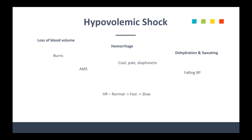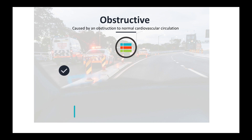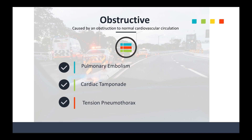Hypovolemic shock is the most common — we see this all the time. This is that loss of blood or loss of fluid: hemorrhaging, dehydration, excessive sweating, or burns where the patient loses plasma. Your altered mental status, cool pale diaphoretic patient, falling blood pressure, and heart rate going from normal to fast to slow as the patient decompensates in hypovolemic shock. Of course, it's important to find out why the patient is in this type of shock.